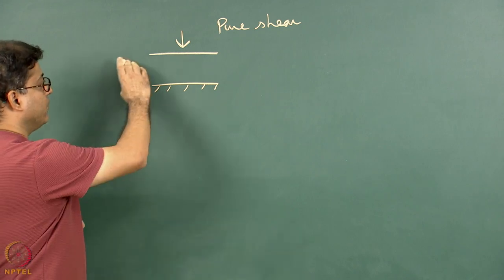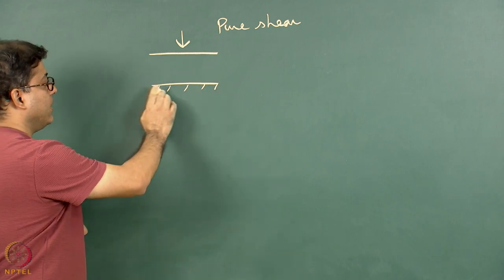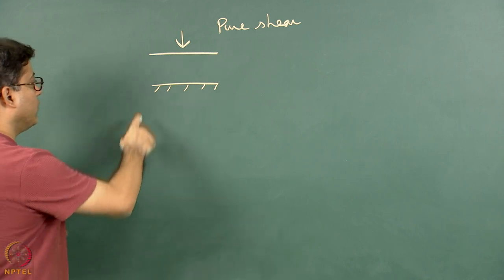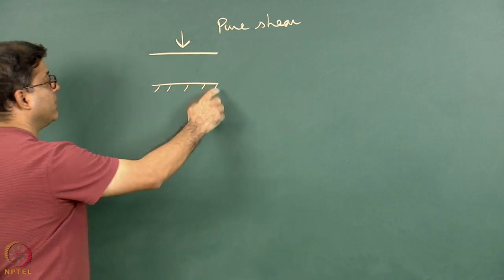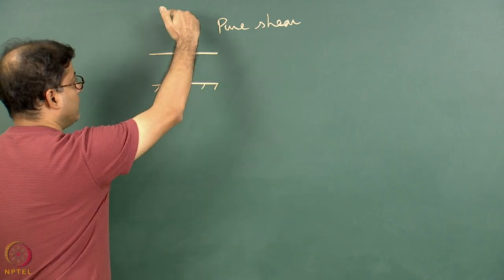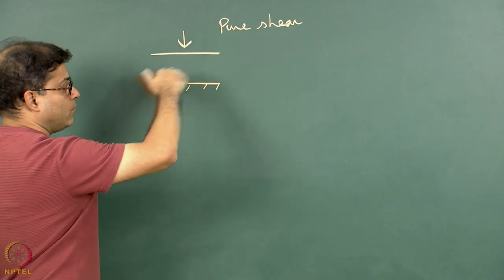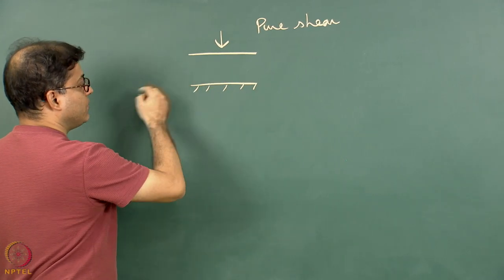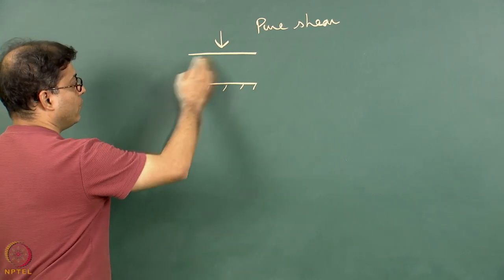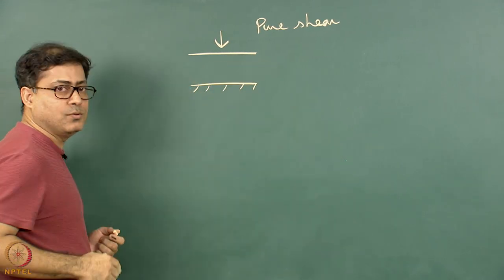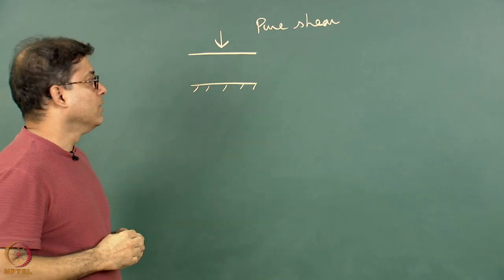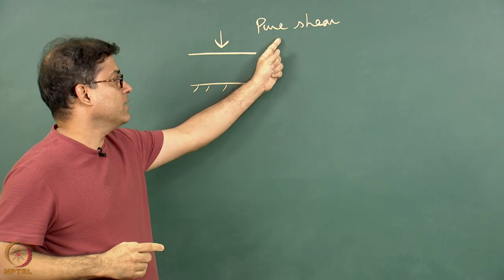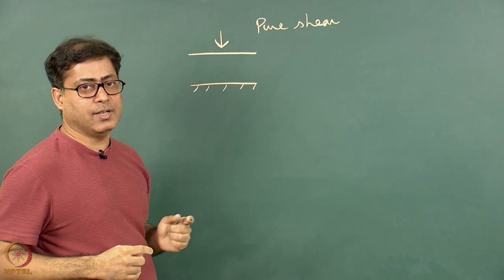Imagine there is a fluid present in a horizontal channel or shear zone. The bottom boundary is static and the top one is pushed perpendicular to its length. The material will naturally be squeezed and will flow out in two directions. In structural geology, we call such deformation pure shear.